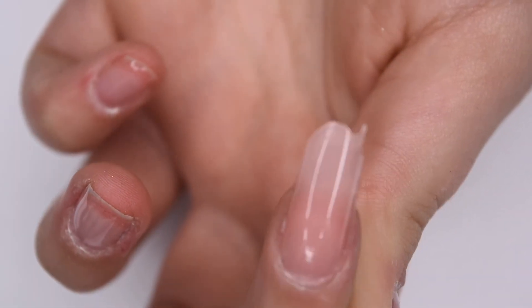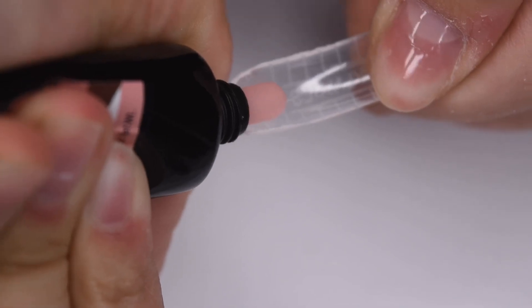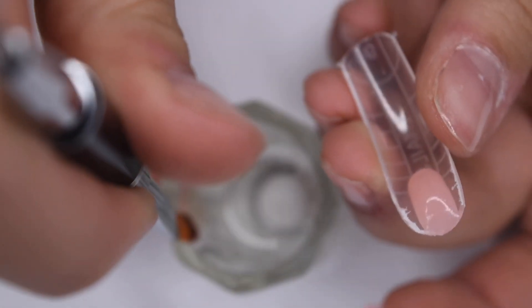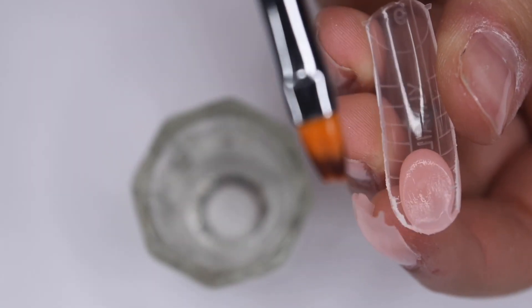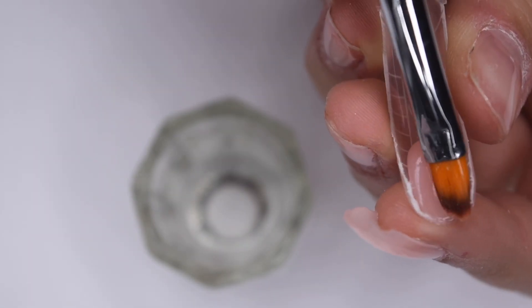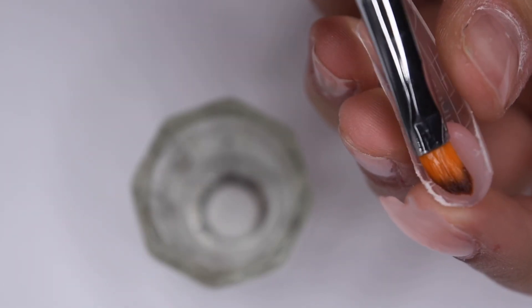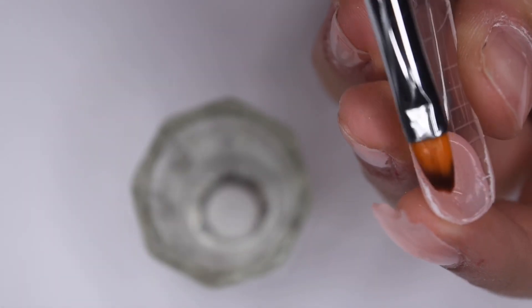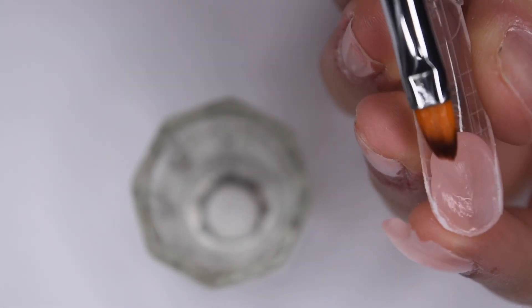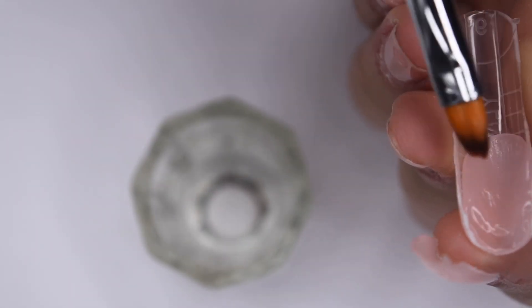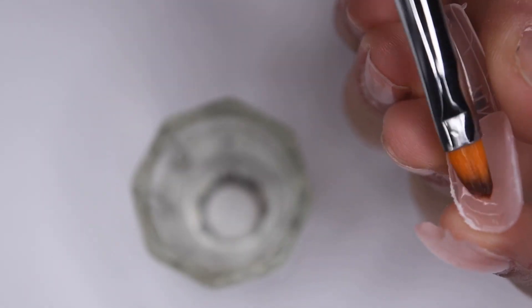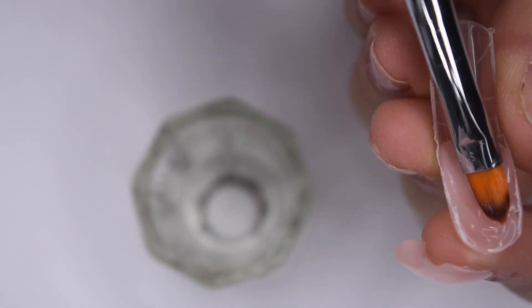Now I am going to show this process one more time just so you can get a better look. So again, I squeezed some of the polygel into my dual form. And you don't need a lot for the length that I created. I didn't go super long, so I don't need a ton of product. And I just pressed that in place, making sure it fits from the sidewall of one side to the other side to make sure that I don't have any gaps in the nail. And I'm also just smoothing it out as best I can so that the application is nice and neat.